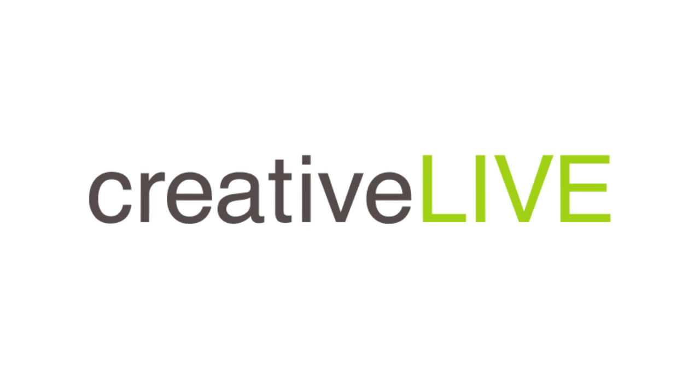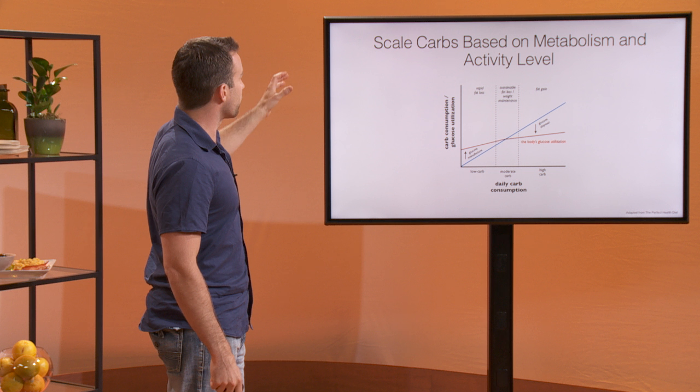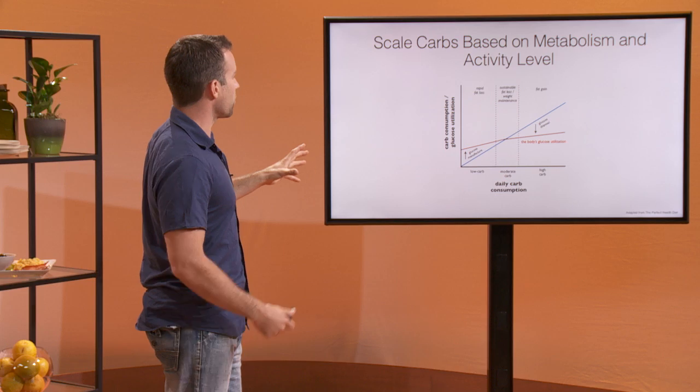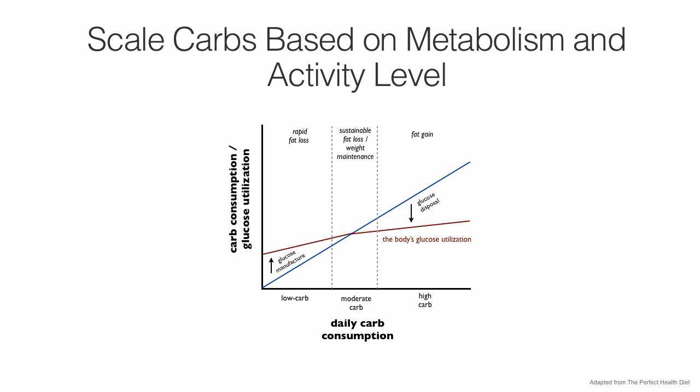This is adapted from the Perfect Health Diet. It's a wonderful example of what happens when you scale your carbs to different levels. If you go super high carb, the diet that was recommended by the government or a lot of other folks for high carb, low fat, you find that your body basically has so many carbs that it needs to dispose of them in some way.